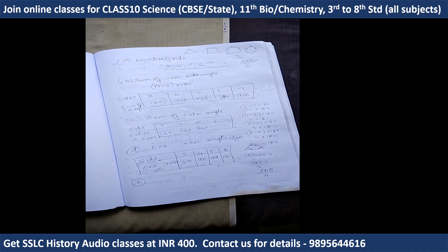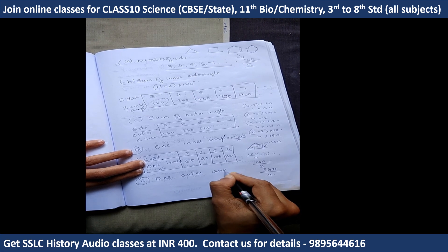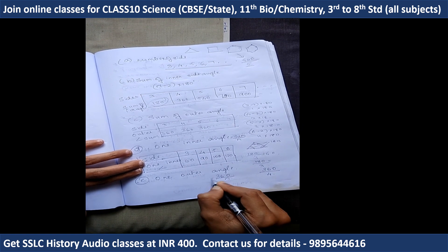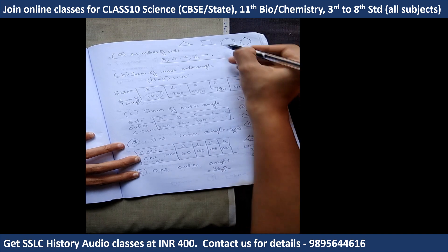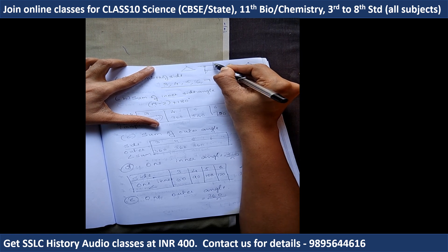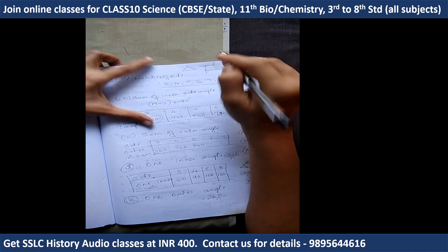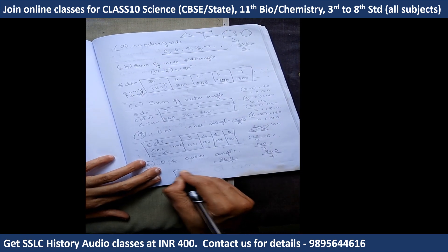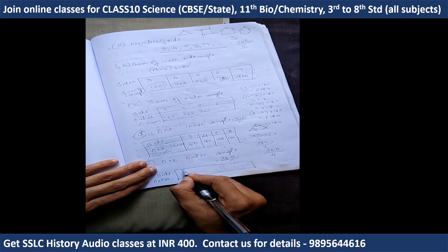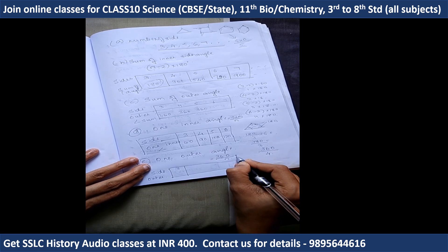Last question: one outer angle. The total sum of outer angles is 360, and it is divided by the number of sides. The outer angle is 360 divided by number of sides. For side 3, one outer angle is 360 divided by 3.